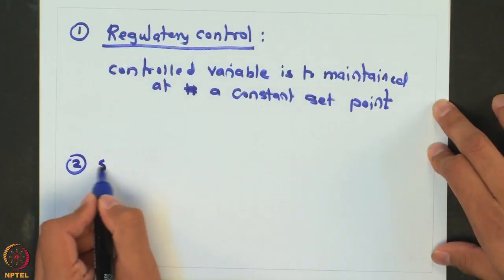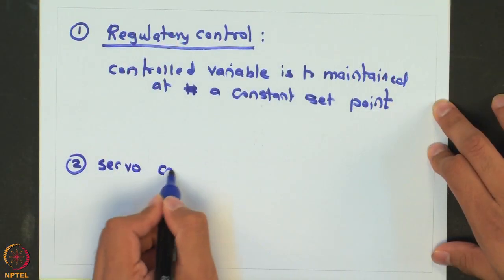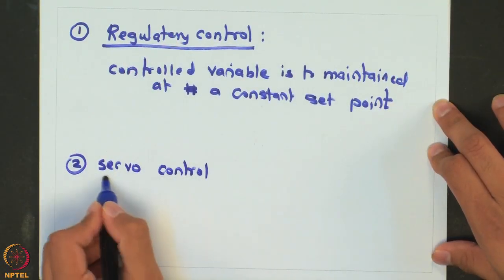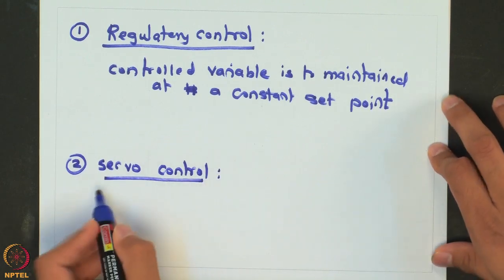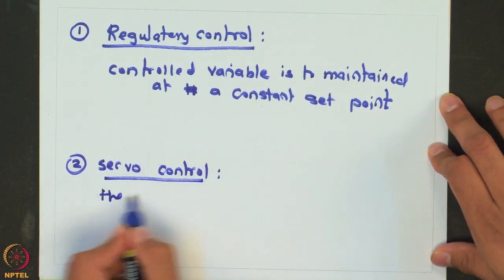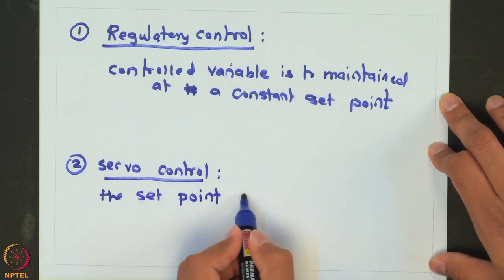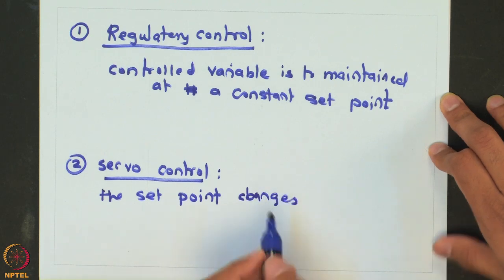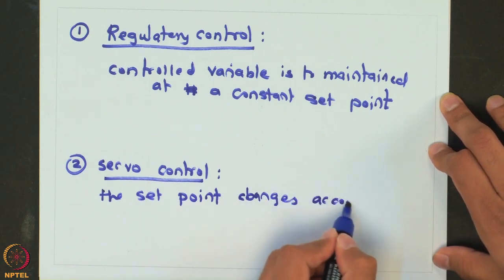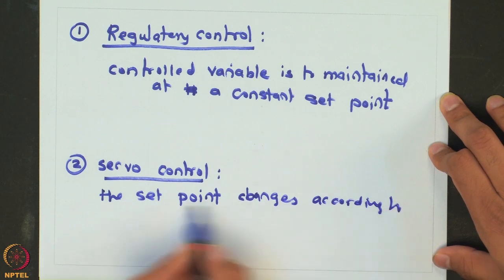The other type of control problems are known as servo control problems wherein the set point changes according to the user.